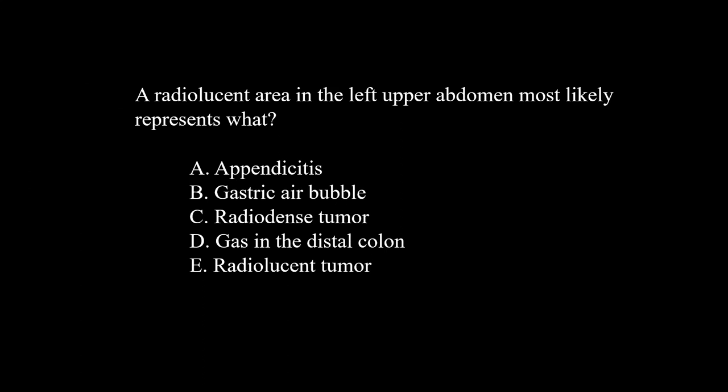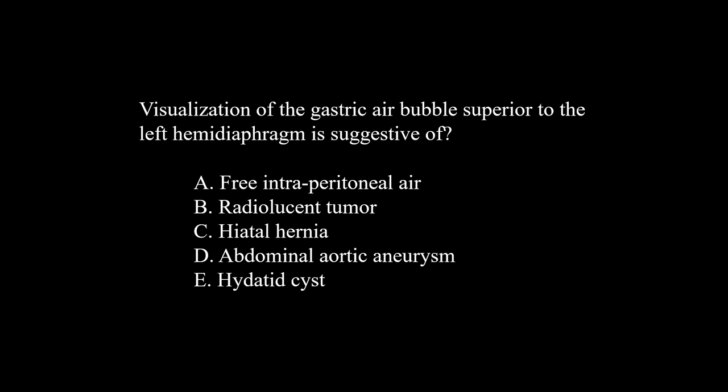A radiolucent area in the left upper abdomen most likely represents — and that would be the gastric air bubble. Visualization of the gastric air bubble superior to the left hemidiaphragm is suggestive of — the correct answer would be a hiatal hernia.